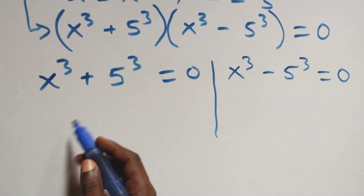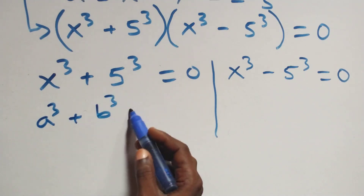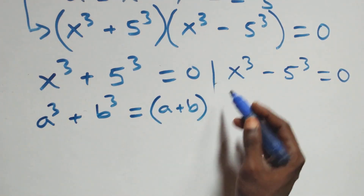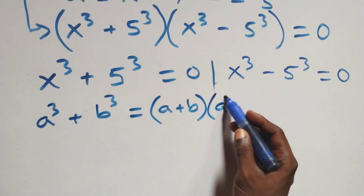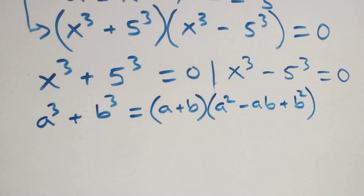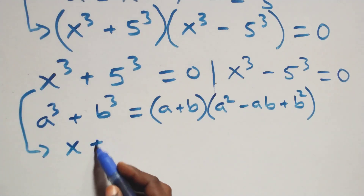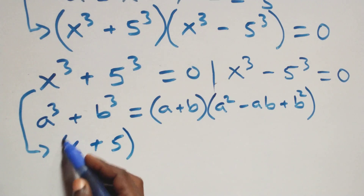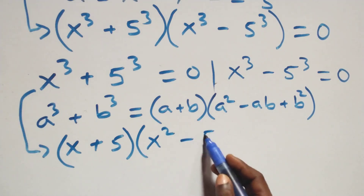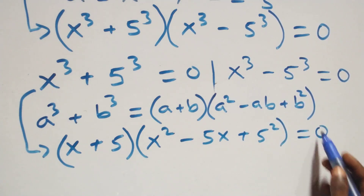Solving on this side, this follows: when we have a cubed plus b cubed, that is the same thing as a plus b in brackets, times a squared minus ab plus b squared. So this becomes x plus 5 in brackets, times x squared minus 5x plus 5 squared, equals to 0.